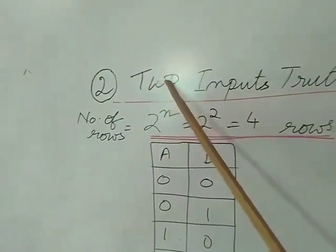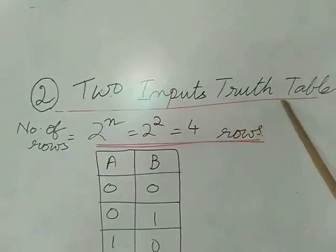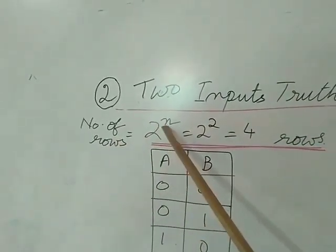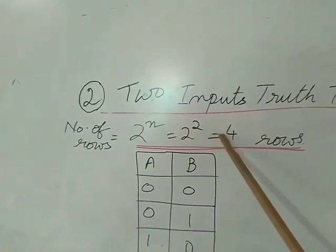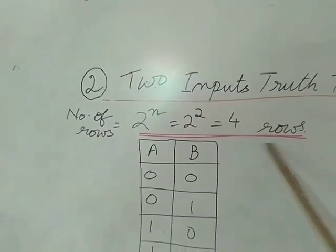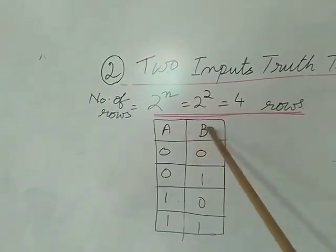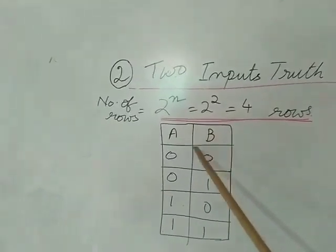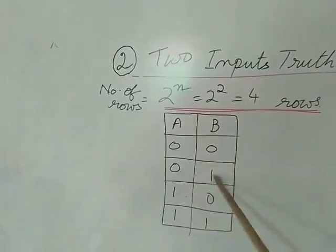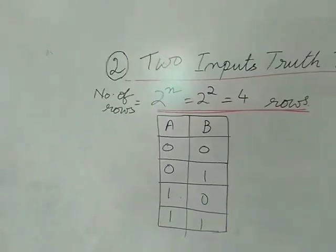To create a truth table for 2 inputs, the number of rows is 2 to the power n — 2 to the power 2 — so we'll have 4 rows only. The truth table looks like this. A and B are the inputs. That's the standard format: 0,0 / 0,1 / 1,0 / 1,1.